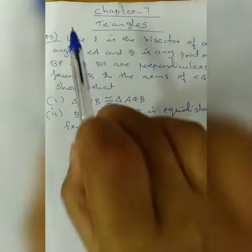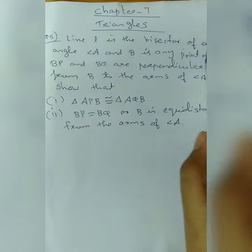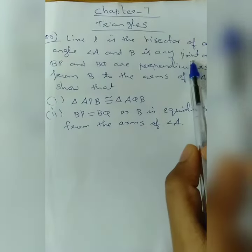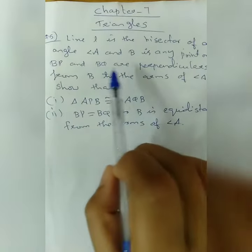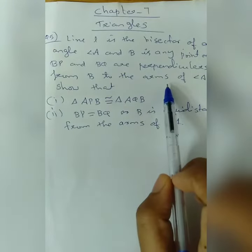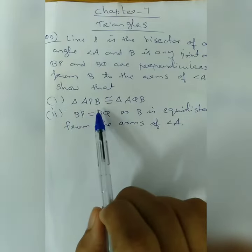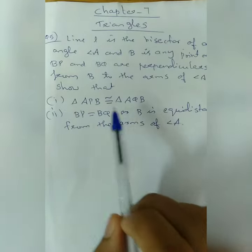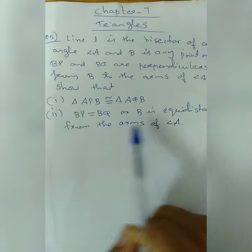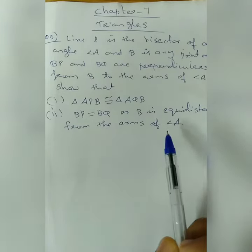Chapter 7, Triangle. Line L is the bisector of angle A, and B is any point on L. BP and BQ are perpendiculars from B to the arms of angle A. Show that: first, triangle APB is congruent to triangle AQB; second, BP is equal to BQ, or B is equidistant from the arms of angle A.